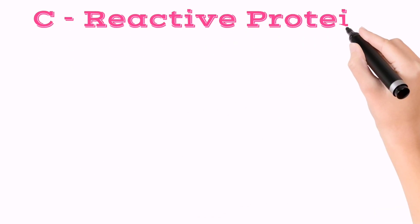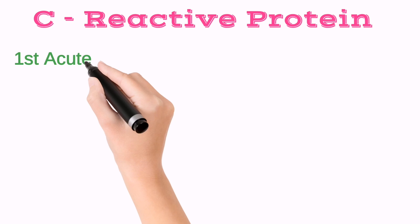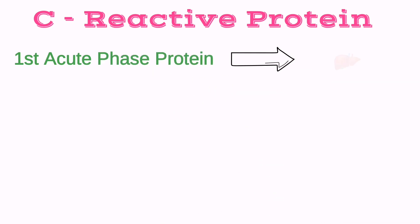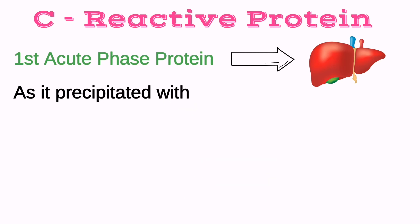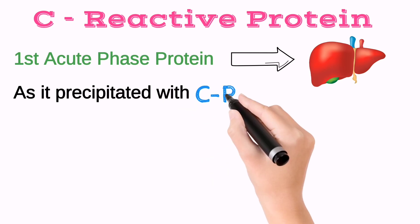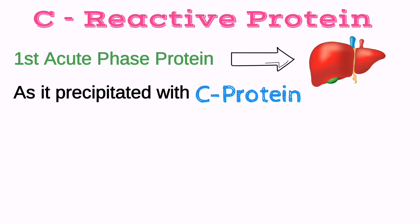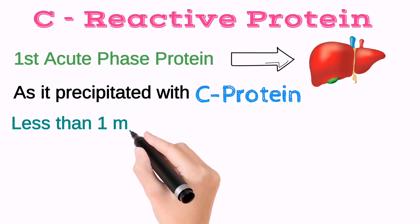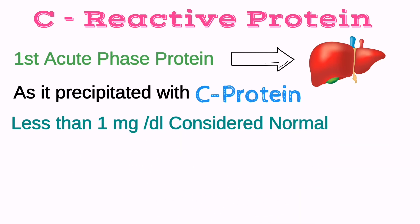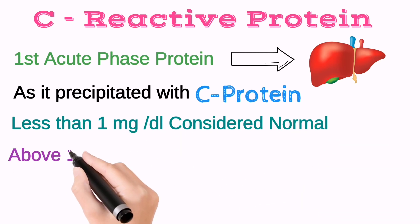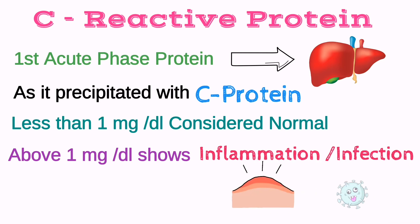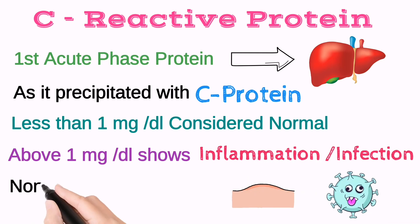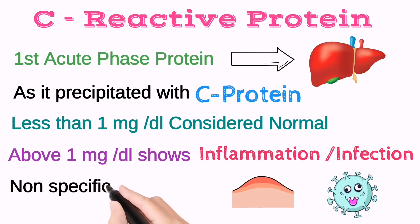First, what is C-Reactive Protein? C-Reactive Protein is the first acute phase protein that is released by the liver. As it precipitated with the protein C, that's why it's named C-Reactive Protein. Less than 1mg per deciliter is considered normal. Above 1mg per deciliter shows inflammation or infection in the body. Remember, C-Reactive Protein test is a non-specific test.